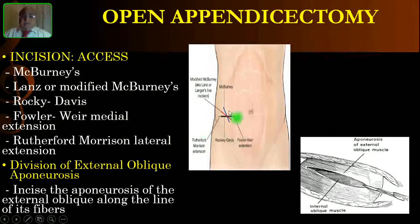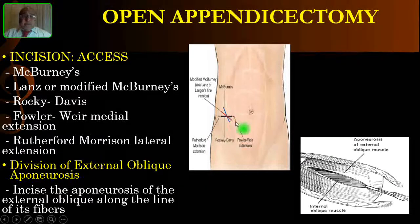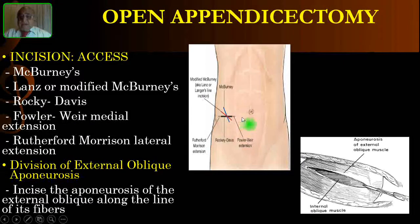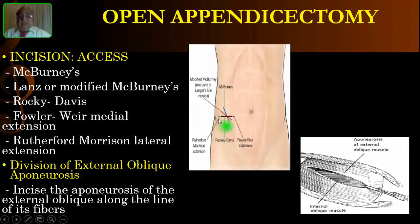If exposure is inadequate, you can extend the Rocky-Davis transverse incision either medially or laterally. If you extend it medially, it is called the Fowler-Weir medial extension, where you will be cutting the rectus muscle or at least the anterior and posterior rectus fascia. If you extend it laterally, that is called the Rutherford-Morrison lateral extension, where you will be cutting the three lateral muscles: external oblique, internal oblique, and transversus abdominis.